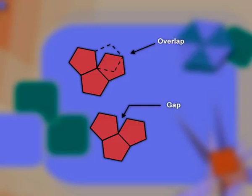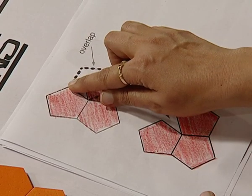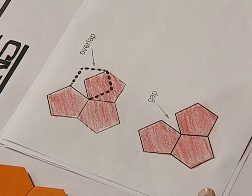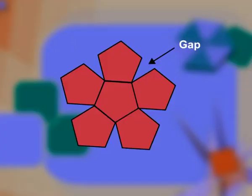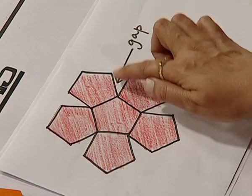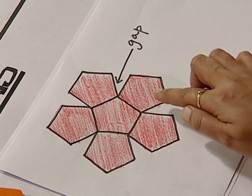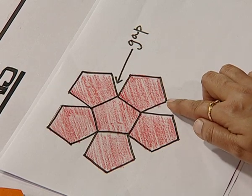Why is that? Because when we place the pentagons together, either it results in a gap. If we try to cover the gap, it results in an overlap. So if I try to form a symmetrical design, even though I am able to get a design, because of the resulting gaps, it cannot be said to be a tessellation.